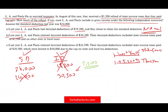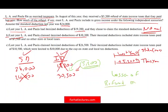Now they received this money back. They included it last year as a deduction, and now the state gave them back the money. The general rule is: you include the lesser of your refund, or the itemized deduction that is greater than the standard deduction. Why? Because that excess itemized deduction above the standard is what gave you the benefit.